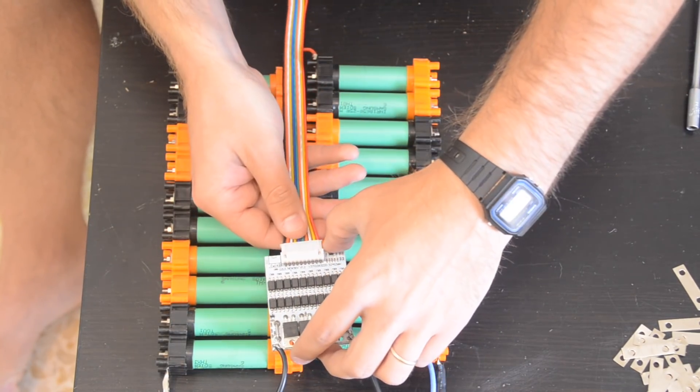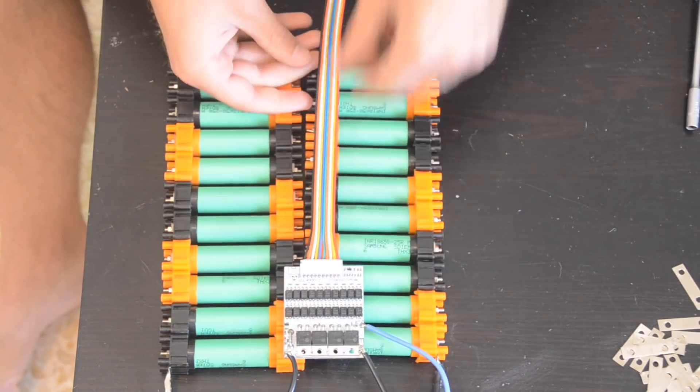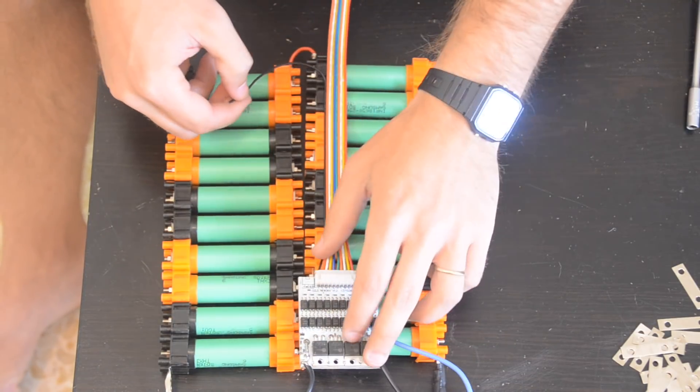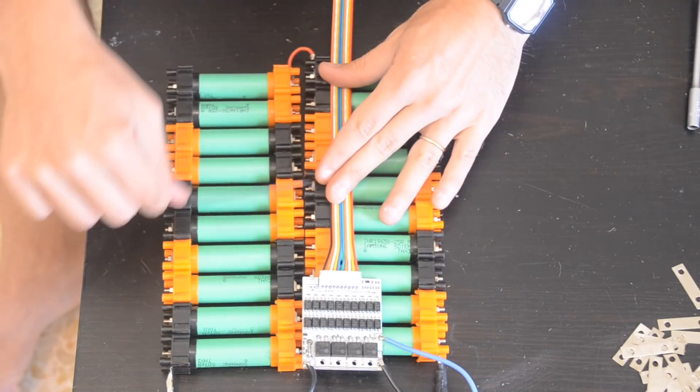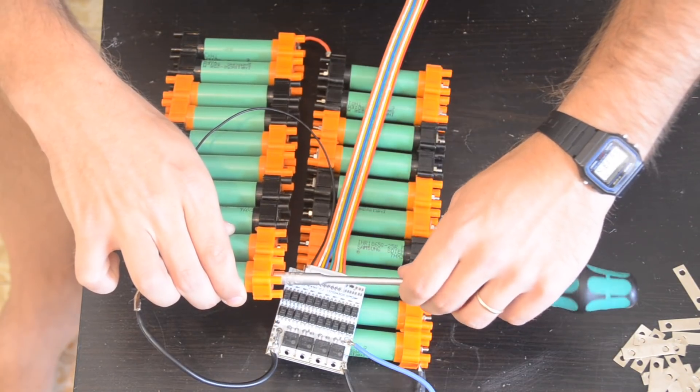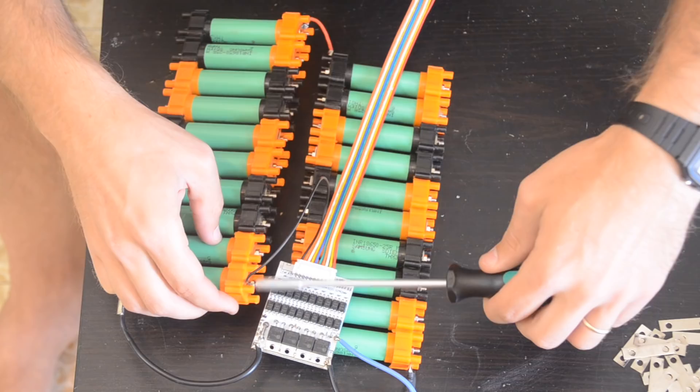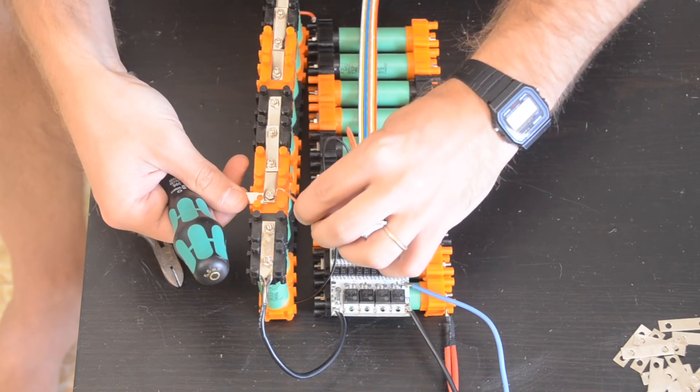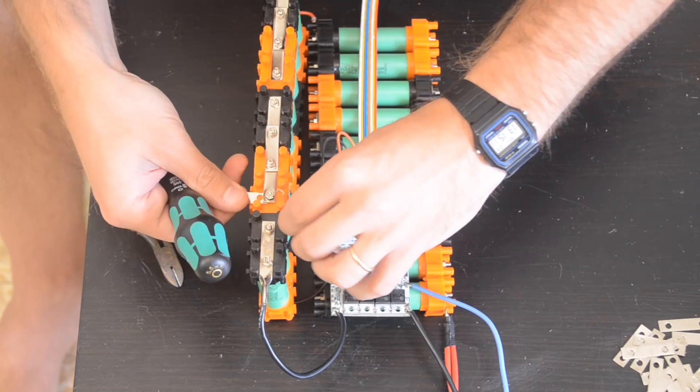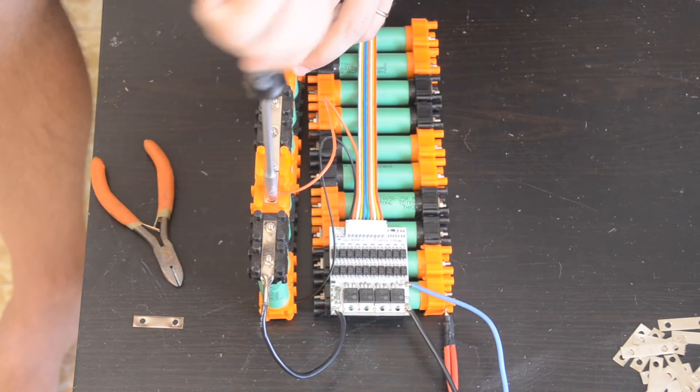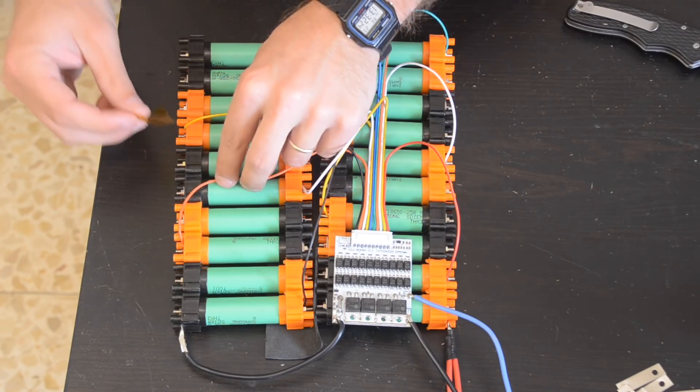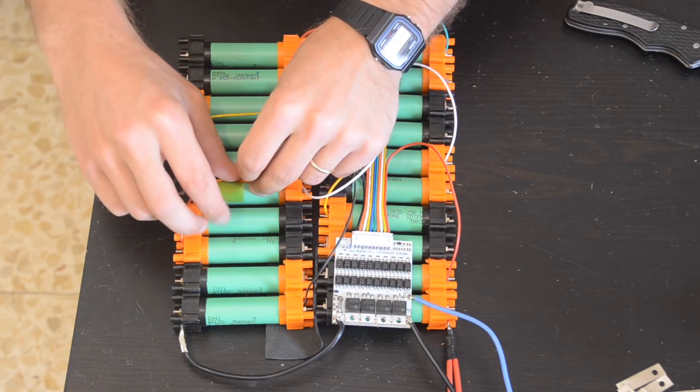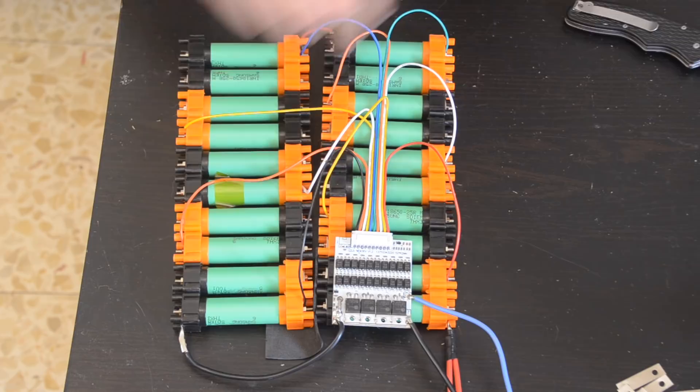Now I can add the balance wires from the BMS. Since this BMS has the same number of wires as the number of cell groups, the first wire will start with the plus 1 group. But, if this wire had one more wire than the number of cell groups, the first wire would start with minus 1. Then, regardless of the type of BMS, each successive wire will continue on each positive terminal until the last wire should end up on the last positive terminal. I also like to use non-conductive Kapton tape to hold the wires down and keep everything a bit neater.